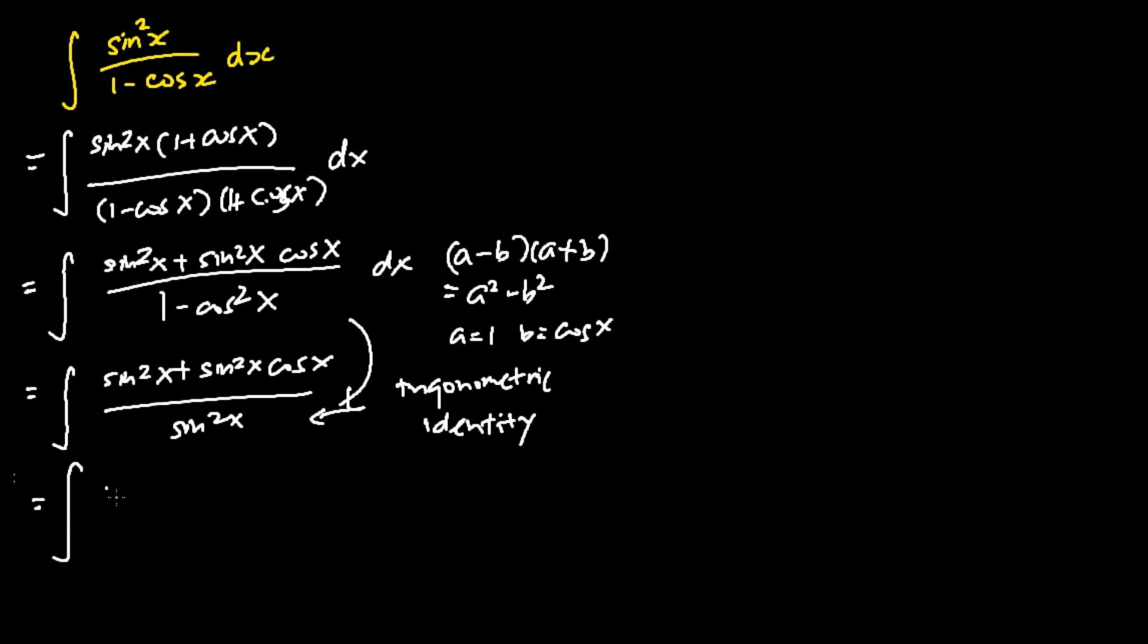I can now split the integral up into two different integrals. The first integral will be the integral of sine squared x over sine squared x dx. And my second integral will be the integral of sine squared x cosine x over sine squared x dx.